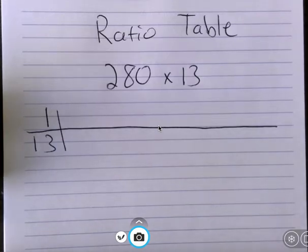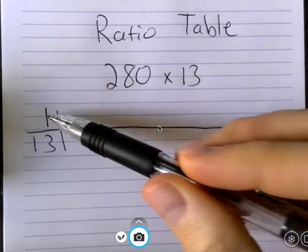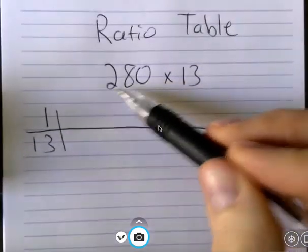Hi everyone, this is Mr. Peter and here's a quick reminder of how to use a ratio table to solve a multiplication problem such as this one. Say we have 280 times 13. Well, 1 times 13 is 13 and I want to get from 1 to 280.